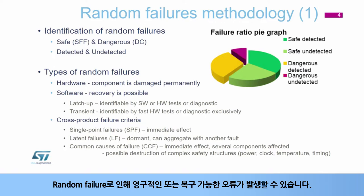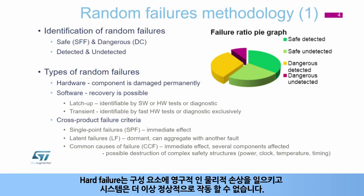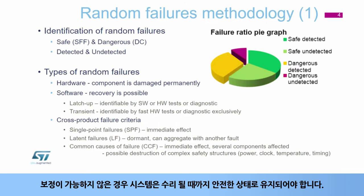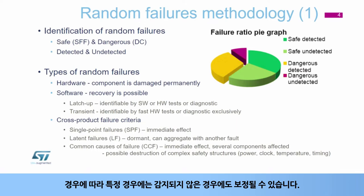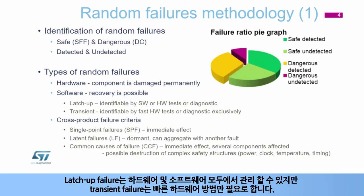Random failures can cause permanent or recoverable errors. Hard failures cause permanent physical damage to the component and the system is no longer able to operate normally. If no compensation is possible, the system has to be put into a safe state until it is repaired. Random soft latch-up and transient failures are returnable and some kind of recovery process is usually applicable. In addition to being detected, these failures can also be compensated for in certain cases. Latch-up failures can be matched by both hardware and software, while transient failures need fast hardware methods exclusively.